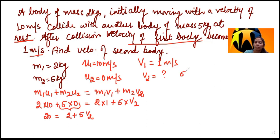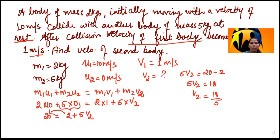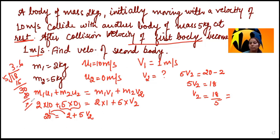From 20 = 2 + 5v₂, we get 5v₂ = 20 − 2 = 18, so v₂ = 18/5 = 3.6 m/s. The velocity of the second body after collision is 3.6 meters per second.